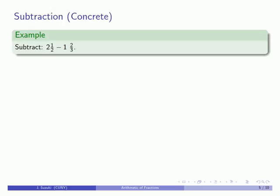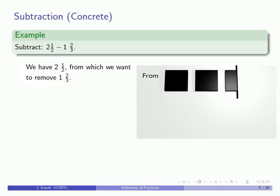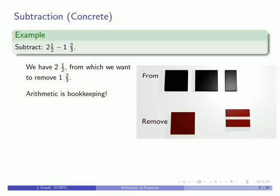What about subtraction? 2 and a half minus 1 and 2 thirds. We'll start with 2 and a half, from which we're going to remove 1 and 2 thirds. It goes without saying, so I won't say it.